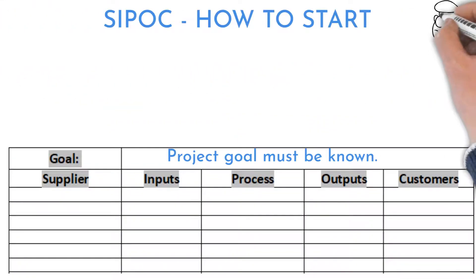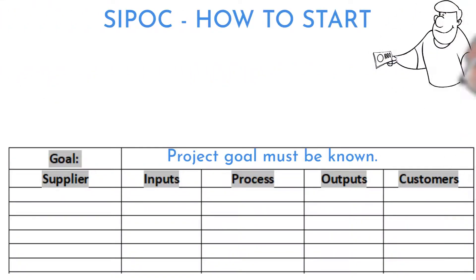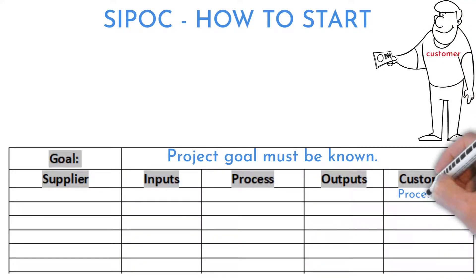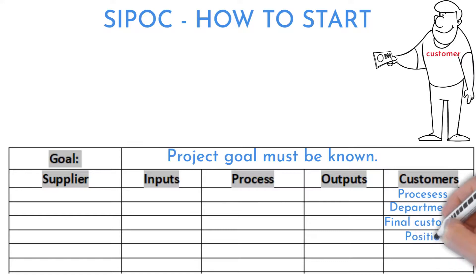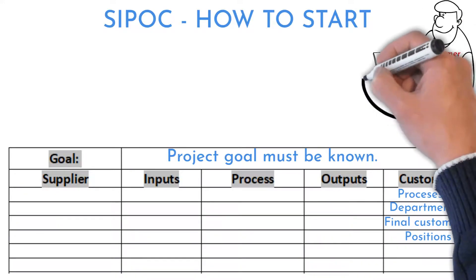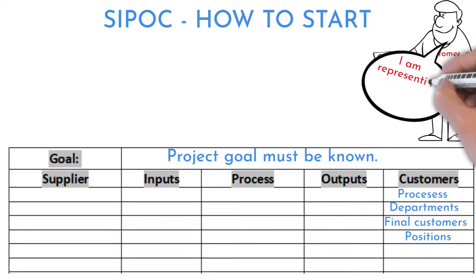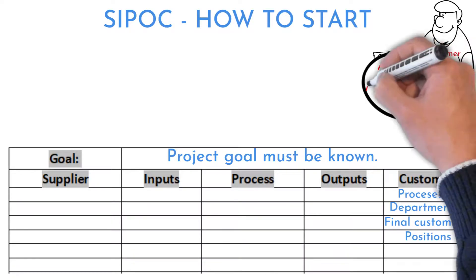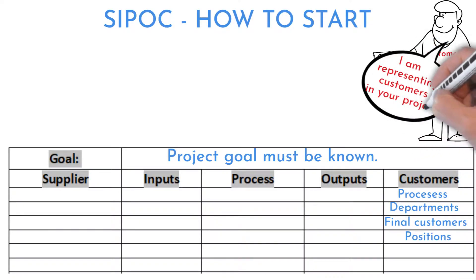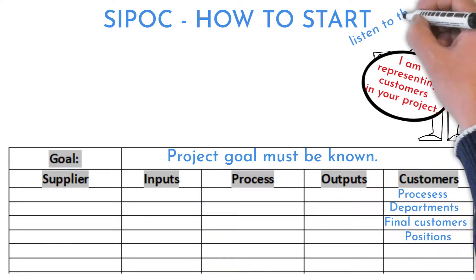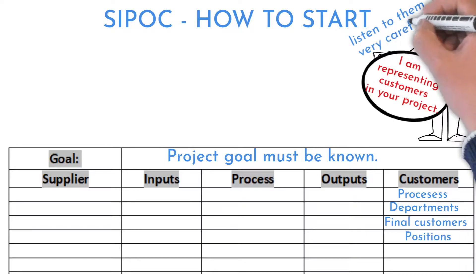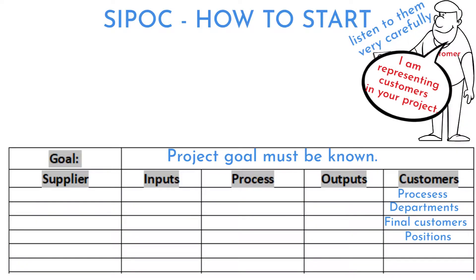Start with understanding who the customers of the SIPOC process really are. List the processes, departments, final customers, or positions which are affected by the failing process. Some members of the project team might be representing affected positions and departments — encourage them to speak about their problems and write them down for future steps.